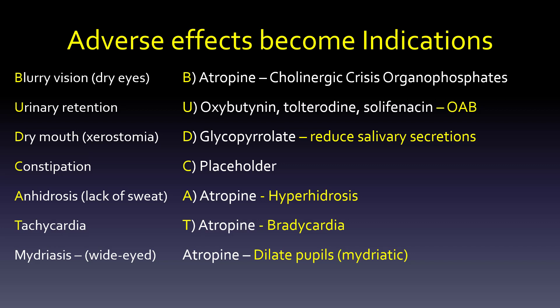We have urinary retention, so if we retain urine, that becomes an indication when we're trying to treat overactive bladder with oxybutynin, tolterodine, or solifenacin. If we have dry mouth or xerostomia, we might want to reduce salivary secretions and might use glycopyrrolate. Constipation is just a placeholder — there are other things you can use. Anhydrosis: atropine can help with hyperhidrosis, or profuse sweating. And the big one — because it causes tachycardia, it can help someone who is very bradycardic.